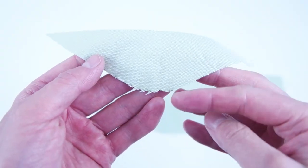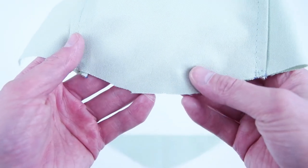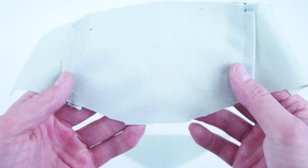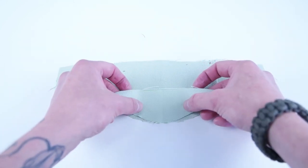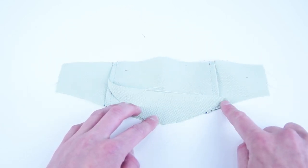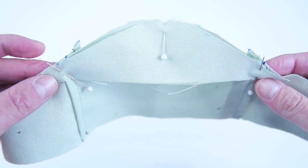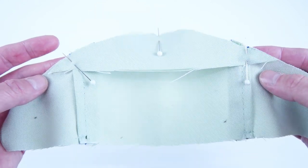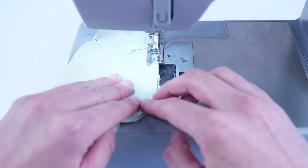Grab your lining chin panel and with the center notch, line it up to the center notch in your lining main panel. And you're going to pin that chin panel along the bottom edge. And now that the chin panel is pinned into position, you're going to sew at a quarter inch seam allowance.